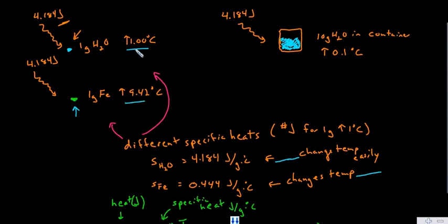The water would go up by only 1 degree Celsius and the iron would go up almost 10 times as much, 9.42 degrees Celsius. So why do these two same amounts of matter but different substances change temperature so differently?